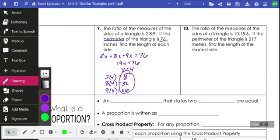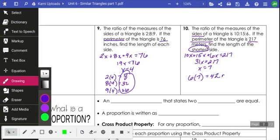Same thing for number 10. The ratio of measures of the sides of a triangle is 10 to 15 to 6. If the perimeter is 217, I'm not adding to 180 because it's not talking about angles. I'll do 10x plus 15x plus 6x equals 217. Then I will do 10 plus 15 plus 6 is 31, so 31x equals 217. When I divide both sides by 31, I get 7. It just wants the shortest side, so I'm going to plug it with the smallest number: 6 times 7 is 42 meters.